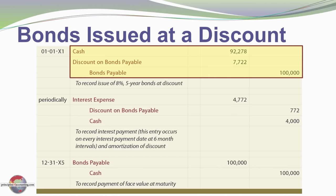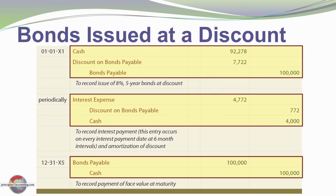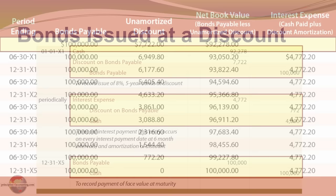Looking at journal entries: at issuance we debit cash $92,278, credit bonds payable for the face amount $100,000, and the offsetting debit is to discount on bonds payable $7,722. Each periodic interest payment involves a credit to cash $4,000, a debit to interest expense $4,772, and the difference is the periodic discount amortization credited to the discount account. At maturity the discount is fully amortized and we repay $100,000: credit cash, debit bonds payable.